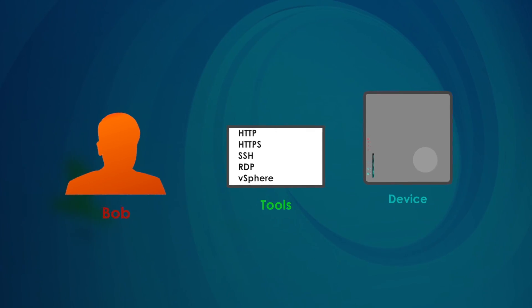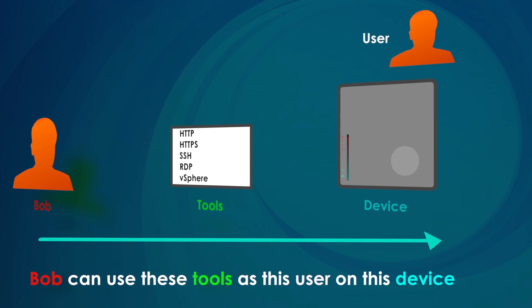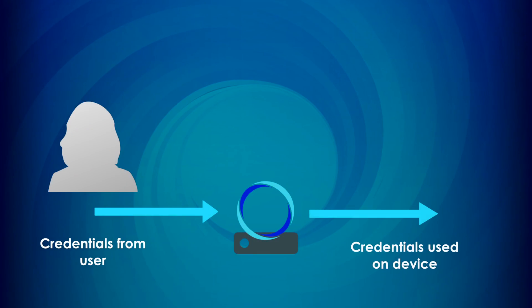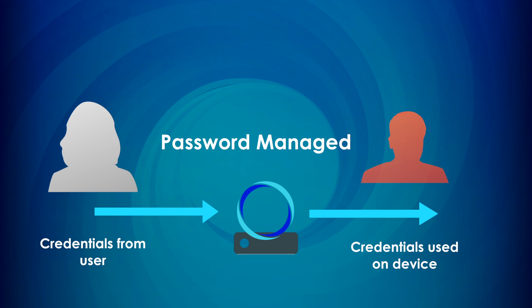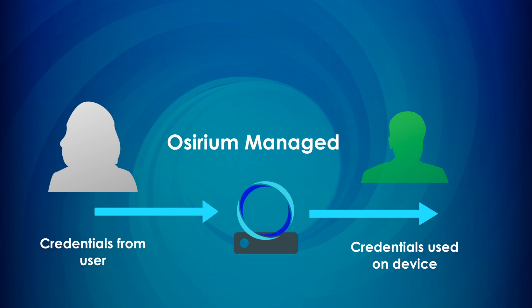One of the key features that Assyrium provides is the full complete life cycle management of privileged user accounts. It's about the right access for the right user to the right device. Today we're going to look at provisioning devices in the Assyrium version 4 series. In this version we've made things much easier. There are three ways that Assyrium can manage accounts on devices: Password Known, Password Managed, and Assyrium Managed.